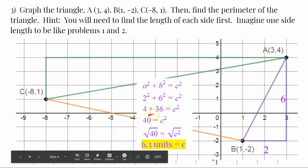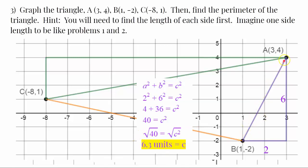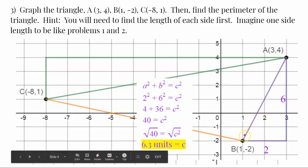add those values together, you get 40. Take the square root of both sides, and you get that this length right here, the hypotenuse of the purple triangle, which is the second side of my triangle, is 6.3 units.